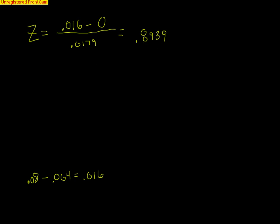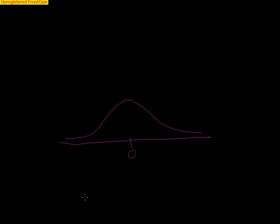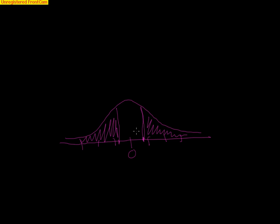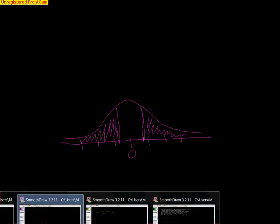Looking at the normal model, the center is 0 — what we expected. Our z-score of 0.89 falls less than one standard deviation above the mean. The probability of getting something more extreme than that is quite large; a lot of data lies out there. Since this is a two-tail test, we also consider the negative side at −0.89. Both tails combined suggest that seeing the difference we saw is very likely.